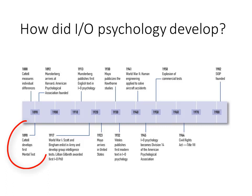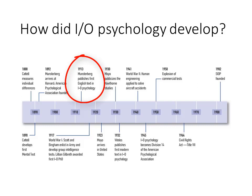In the 1890s, James Cattell developed the first mental tests and began measuring individual differences. In 1913, Hugo Munsterberg published the field's first textbook, Psychology and Industrial Efficiency.